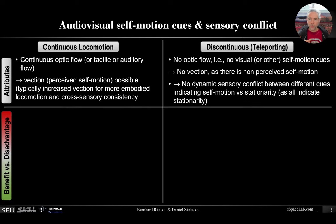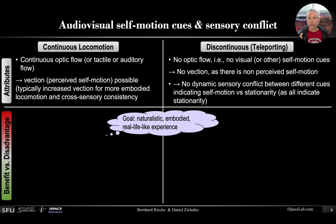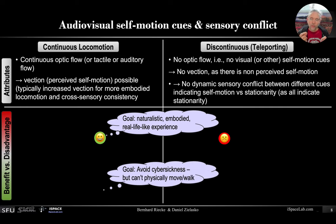These are the attributes. Whether they represent a benefit or disadvantage really depends on what we want to achieve. If the goal is a more naturalistic, embodied, real-life-like experience where you continuously move through space, then continuous locomotion might be the best approach, and teleporting might not be. However, if you really want to avoid cyber-sickness and are prone to it, but for some reason cannot physically move or use other continuous techniques that reduce motion sickness, then teleporting might be the better option.